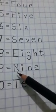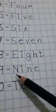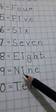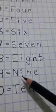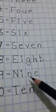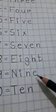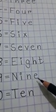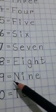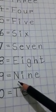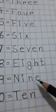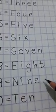Here is nine. At first I will write N, then I will write I, then I will write N, then I will write E. Nine. N-I-N-E. Nine.